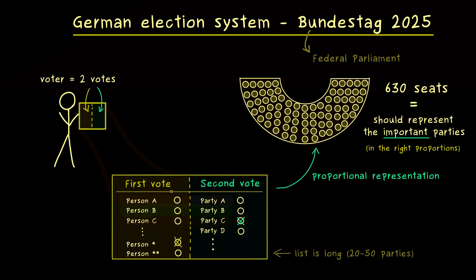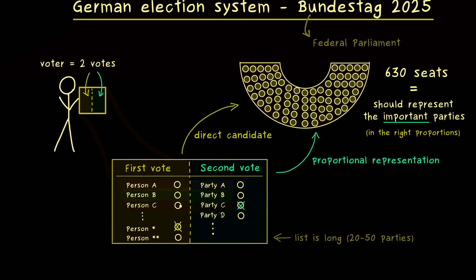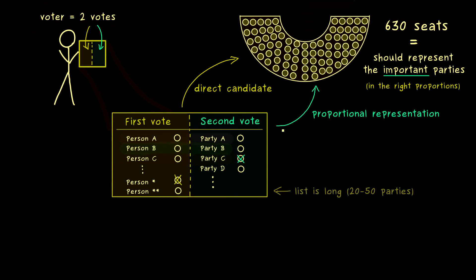As a voter you are allowed to make one cross for a person you want to send to the Bundestag. The first vote cannot change the proportions in the federal parliament, but it can tell us which people take the seats. In total, what we get here is a so-called mixed member proportional representation system. Roughly, for the first vote we have a winner-takes-all principle, and for the second vote we have proportional representation.